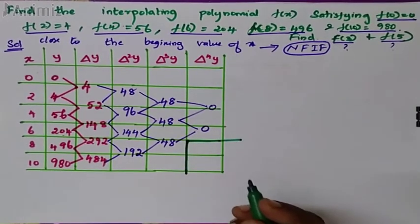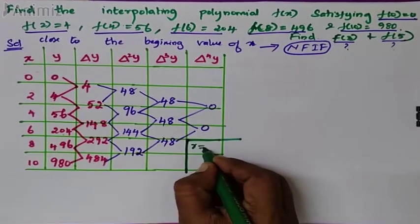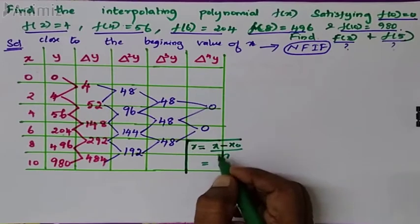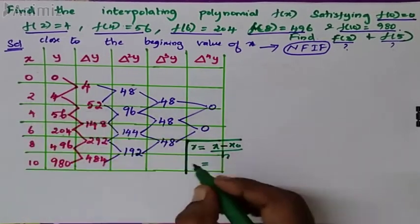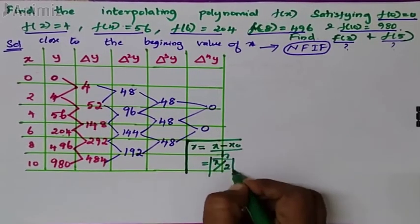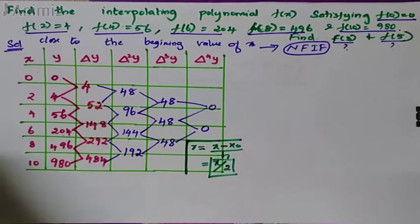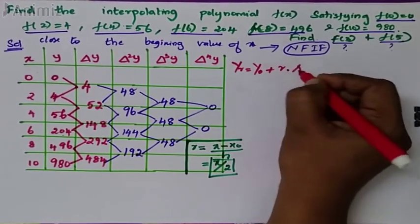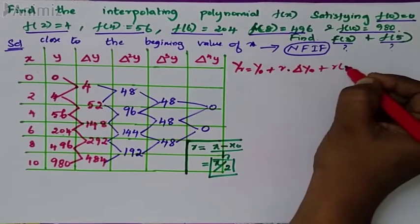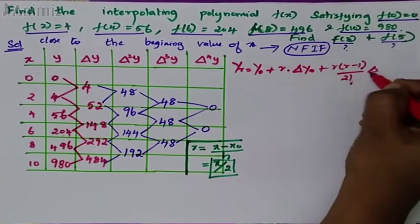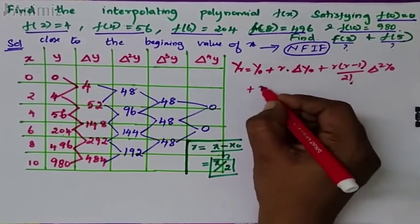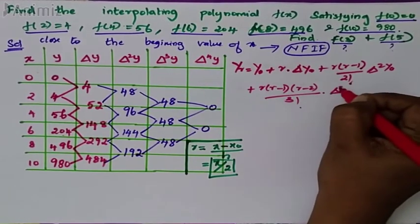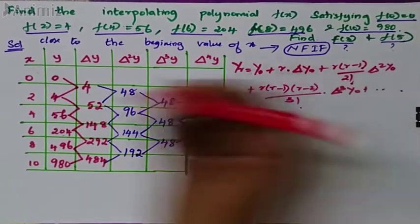So for Newton's forward interpolation formula, r is x minus x0 by h. Now x0 is 0, h is 2, so r is x by 2. Now Newton's interpolation formula: y of r is equal to y0 plus r into first forward difference of y0 plus r into r minus 1 by 2 factorial into second forward difference of y0 plus r into r minus 1 into r minus 2 by 3 factorial into third forward difference of y0.